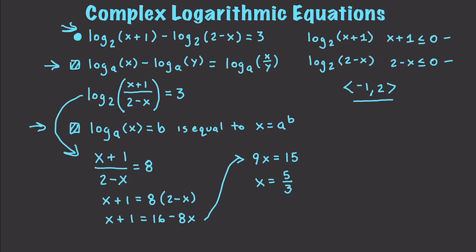We verify that x equals 5/3 fits within our defined range of negative 1 to 2, and indeed it does, so x equals 5/3 is correct. I know I covered a lot of things in this video. Definitely write down the rules and hunt around on the internet to solve some logarithmic and exponential equation problems. Please leave your questions and comments down below. Till next time.